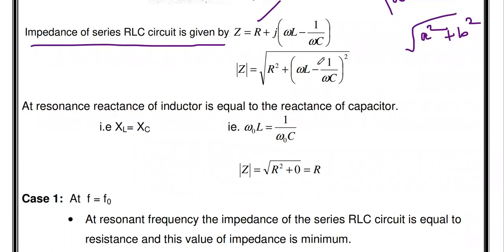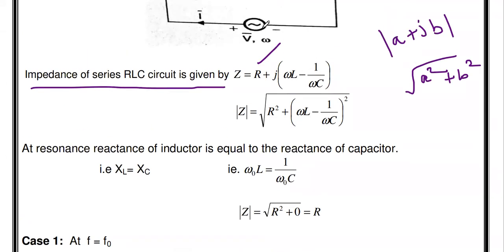From this equation, Z depends on the resistor value, inductor value, capacitor value, and omega — the operating frequency. If the frequency of the input signal varies, the impedance of the series RLC circuit also varies. Z is not constant with respect to frequency omega; it will vary. That is why we are going to draw the impedance versus frequency graph.